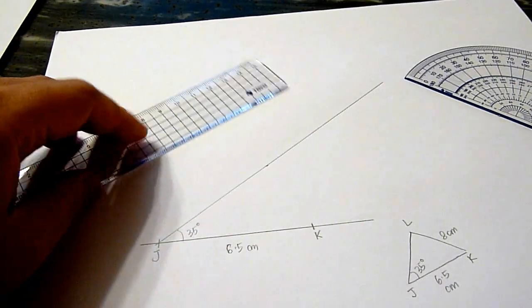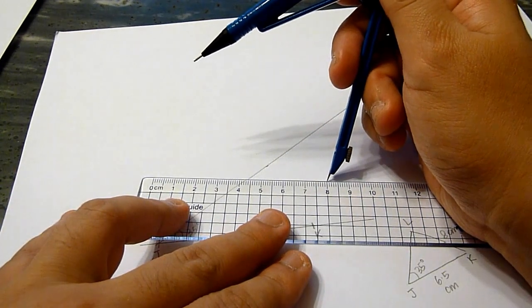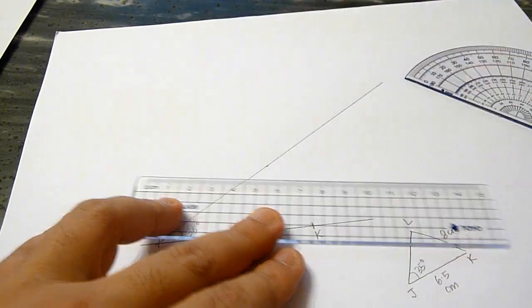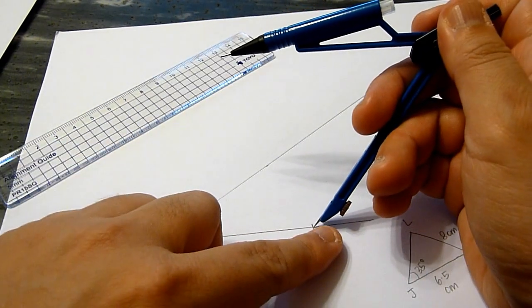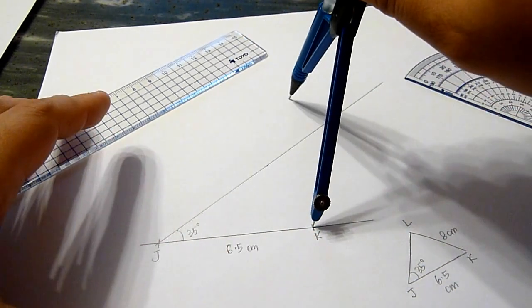Now, to draw the line 8 cm, we use the compass. Stretch the arm such that it measures 8 cm. Place the sharp end at point K. Draw an arc.